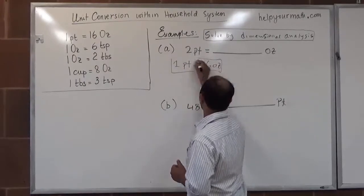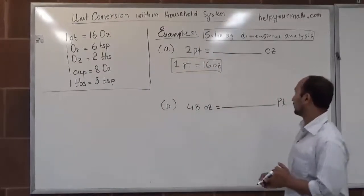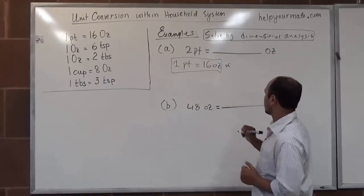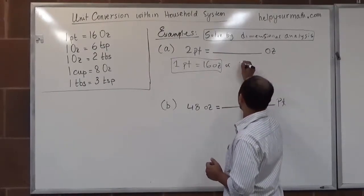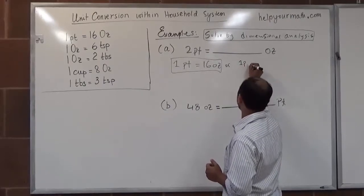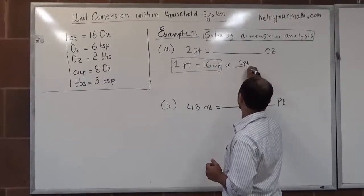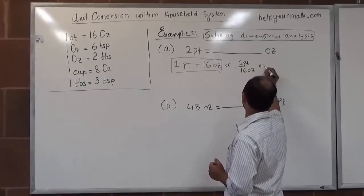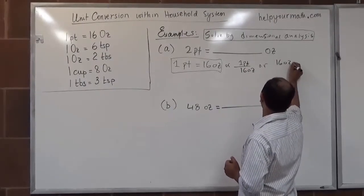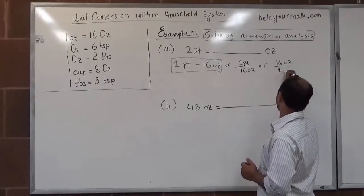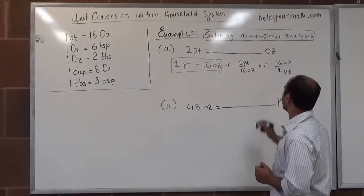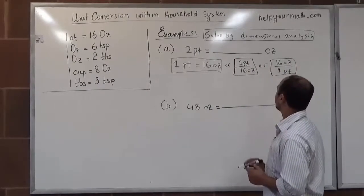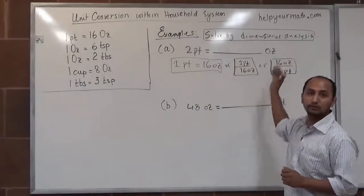From the table, we got 1 pint equals 16 ounces. We can rewrite that because we are using dimensional analysis — we can rewrite that as 1 pint over 16 ounces, or we can also write 16 ounces over 1 pint. There are different ways we can write it, but we are looking to convert pints to ounces.